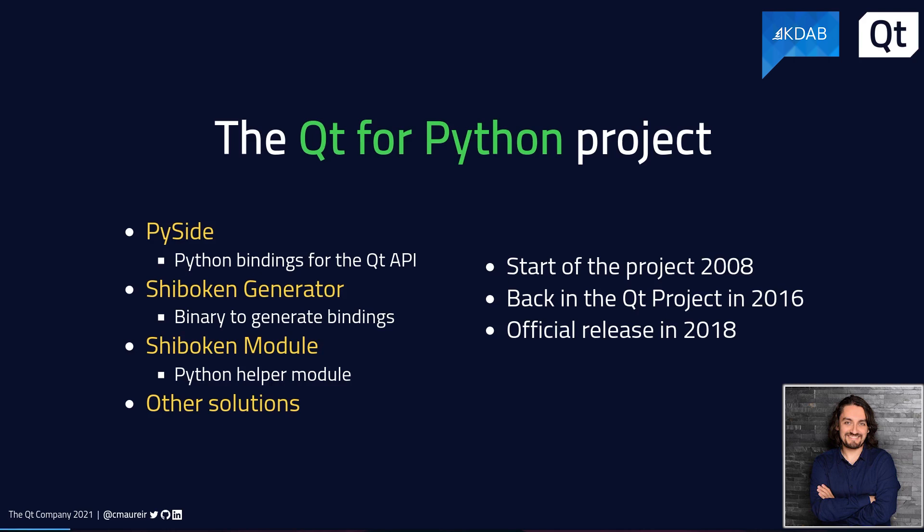Just for context, when we are talking about Qt for Python, we involve PySide, which is the binding implementation for the whole Qt API, and the Shiboken generator and module. The generator is a tool that generates the binding itself. On the other hand, we have the module, which is a helper module that contains a couple of functions to help your interaction with C++ within Python. There are many other solutions in these projects, but overall, these are all the topics that the Qt for Python project involves.